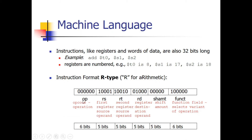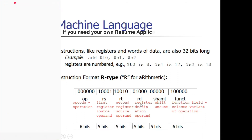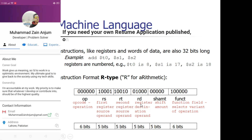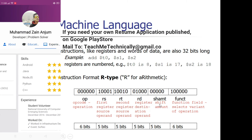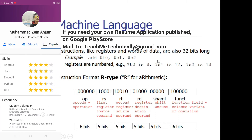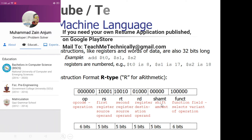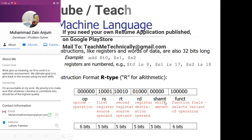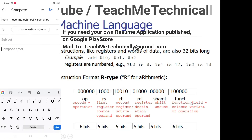In the R-type instruction, there is an opcode, there is an RS source register, RT source register, RD register which is a destination register, and then there is a shift amount. For example, if we want to perform some shifting, we will enter some values there.